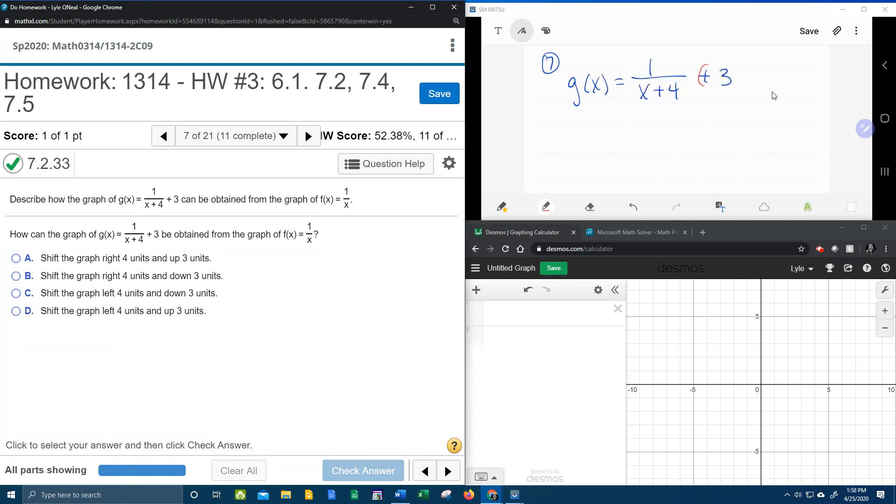So a number that is added or subtracted outside of the function, here this number is outside the fraction, this is considered a vertical shift. Plus is up, minus is down.